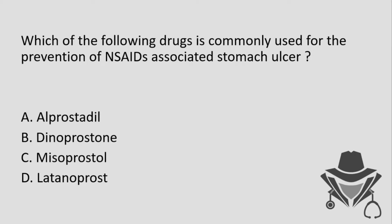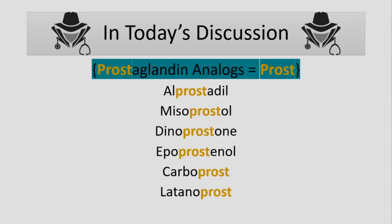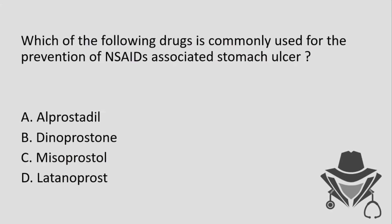As we can see from this question, it's asking about a specific class of drugs. All of the drugs seen in options A, B, C, and D are under the class of prostaglandin analogues. We can notice that all prostaglandin analogues have the word 'prost' — P-R-O-S-T — in their names.